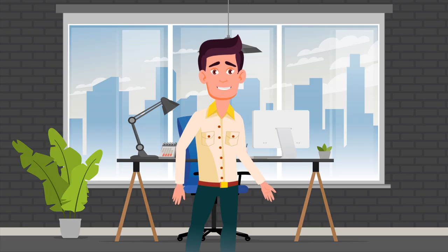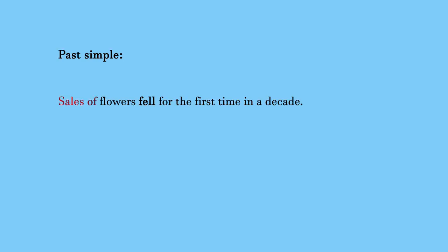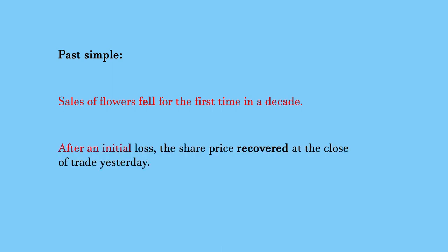To describe actions which took place in the past that have no connection to the present, we use the past simple. Here are two examples. Sales of flowers fell for the first time in a decade. After an initial loss, the share price recovered at the close of trade yesterday.